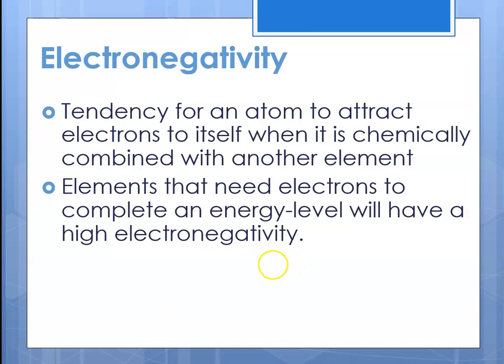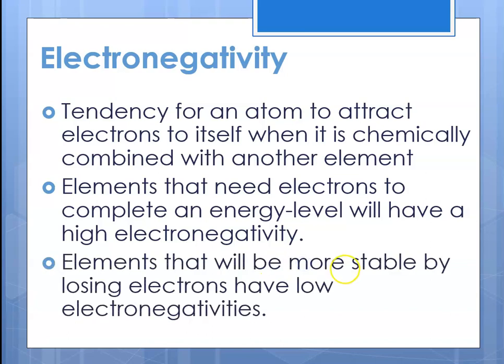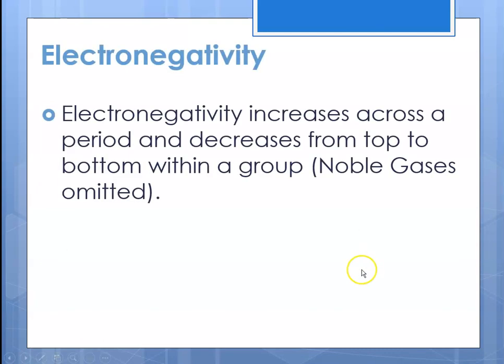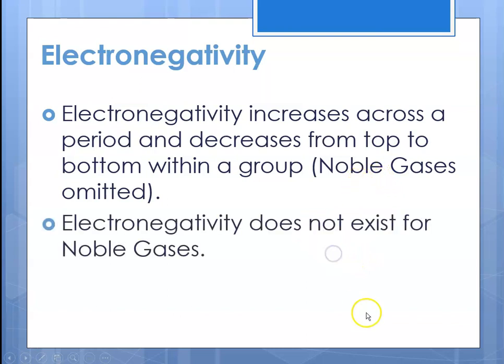Elements on the right side of the periodic table tend to have very high electronegativities, and those are typically nonmetals. Elements more stable by losing electrons have low electronegativity — in general, metals have very low electronegativity, with the lowest on the far left-hand side of the periodic table. Electronegativity increases across a period and decreases from top to bottom within a group. Noble gases are omitted because electronegativity does not exist for noble gases.